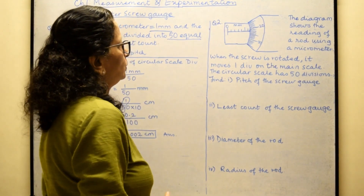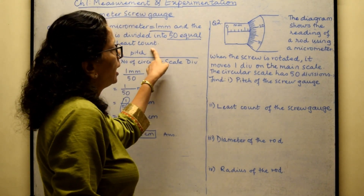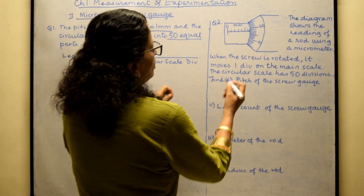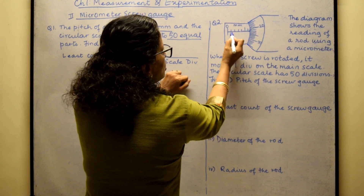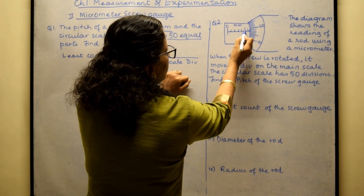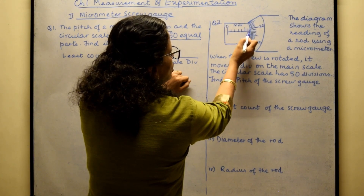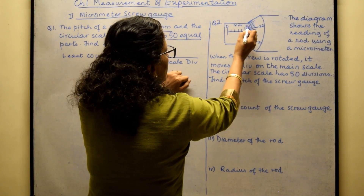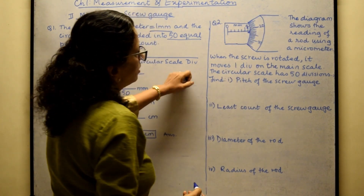In Question 2, a diagram is given. Mostly you will be given either a question like this, or a diagram showing the main scale reading. The main scale here is given in millimeters: one, two, three, four, five millimeters. After six millimeters there is a fraction, which is going to be measured by the circular scale. So we have 0.6 as our main scale reading.